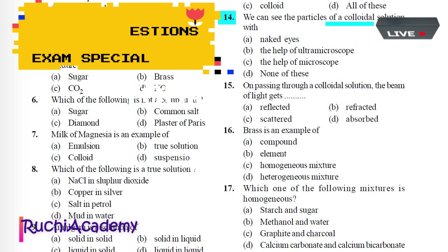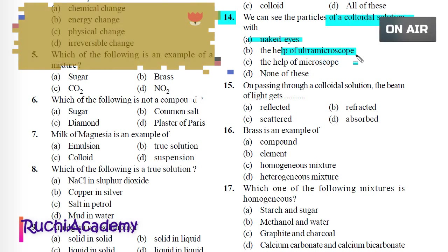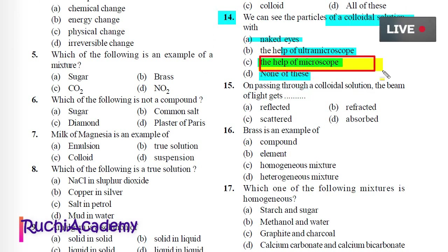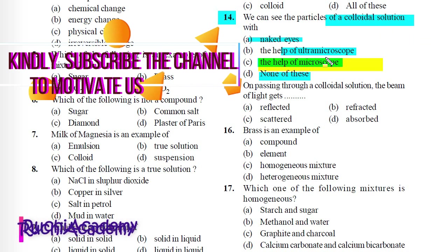Question 14: We can see the particles of a colloidal solution with: A) Naked eyes, B) Help of ultra microscope, C) Help of microscope, D) None of these. Correct answer is B) Help of ultra microscope, because the particle size of colloids is between 10⁻⁵ to 10⁻⁷ centimetres.